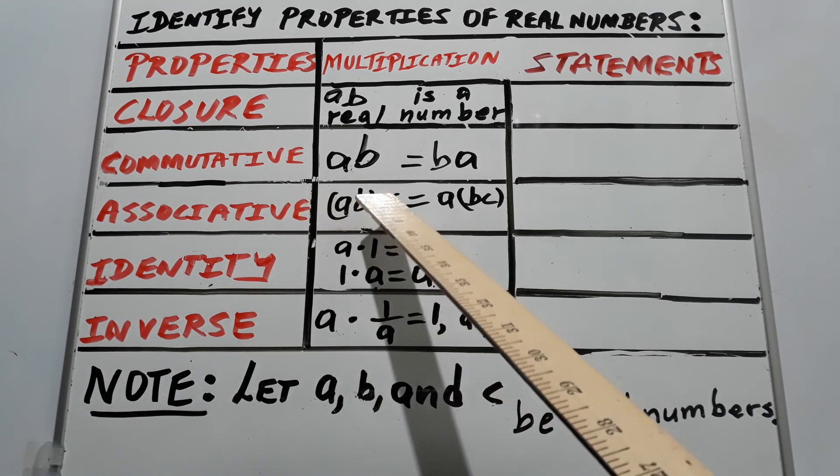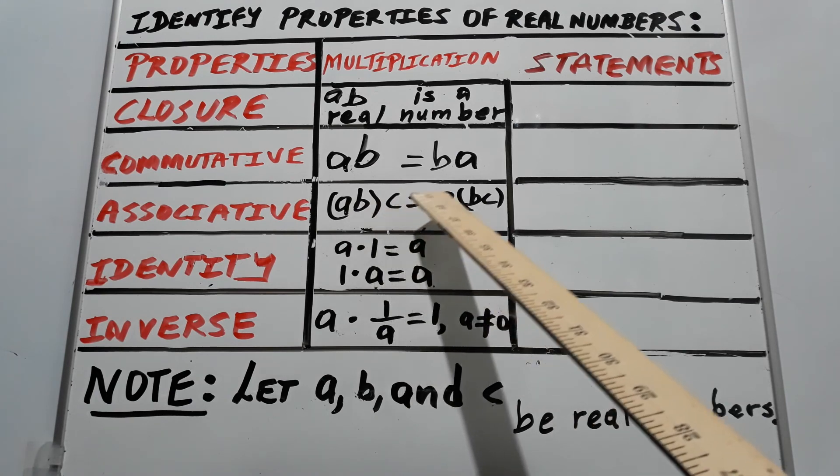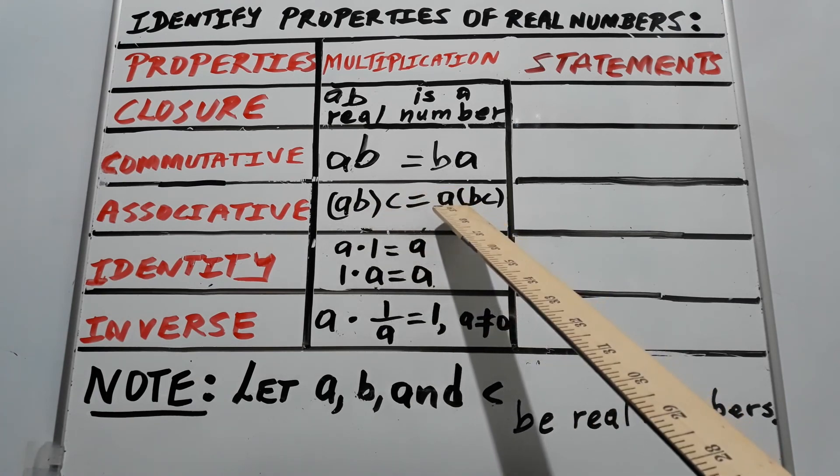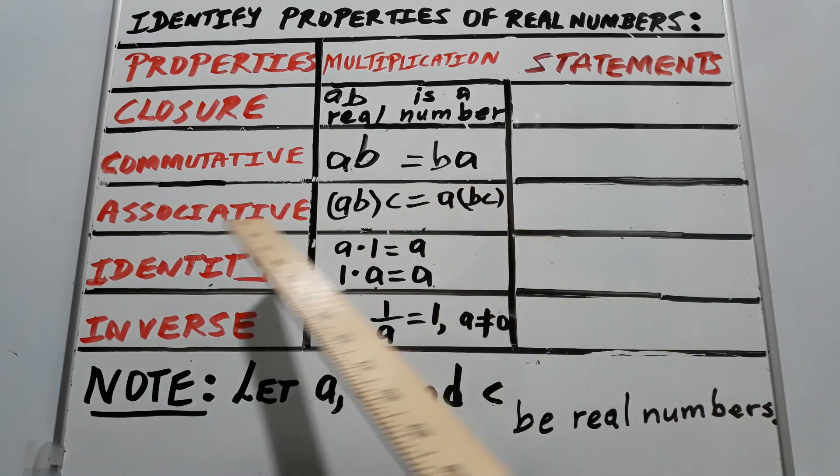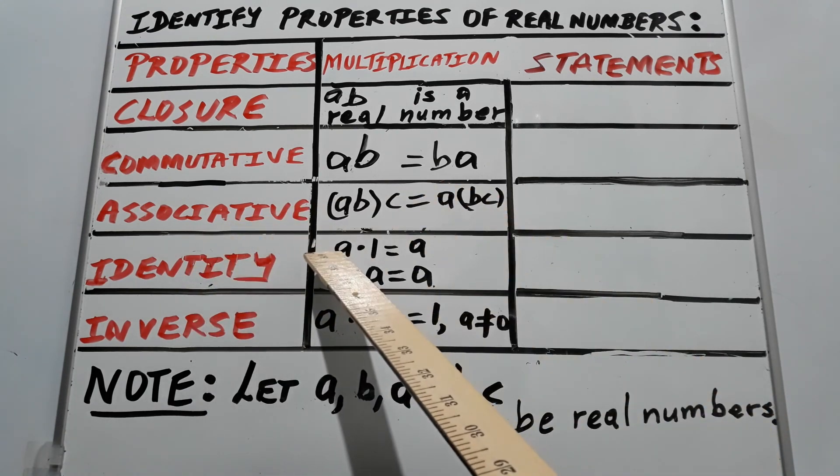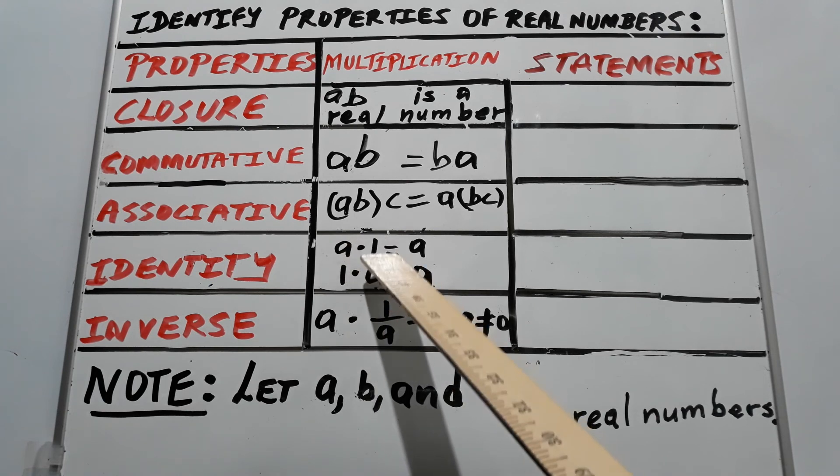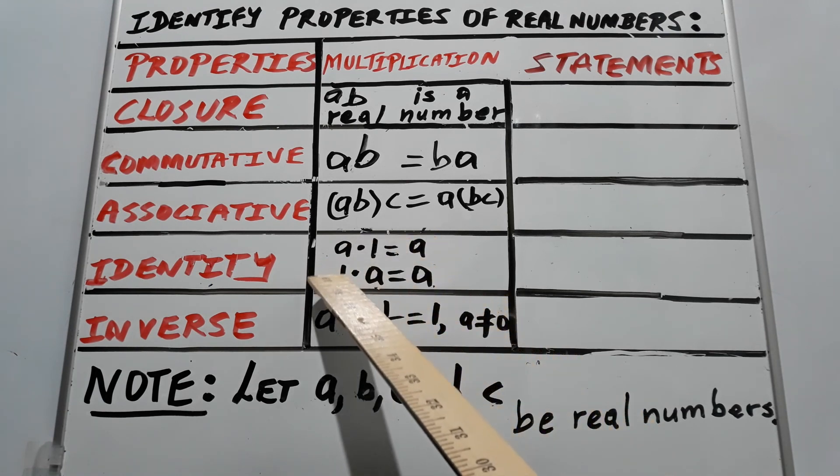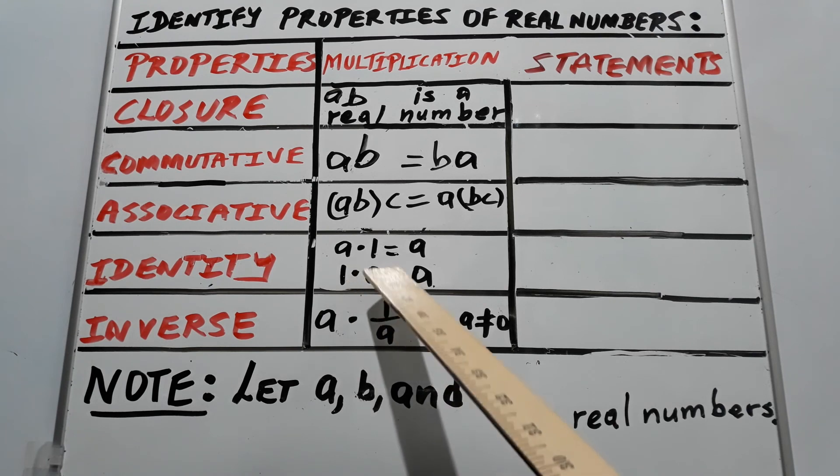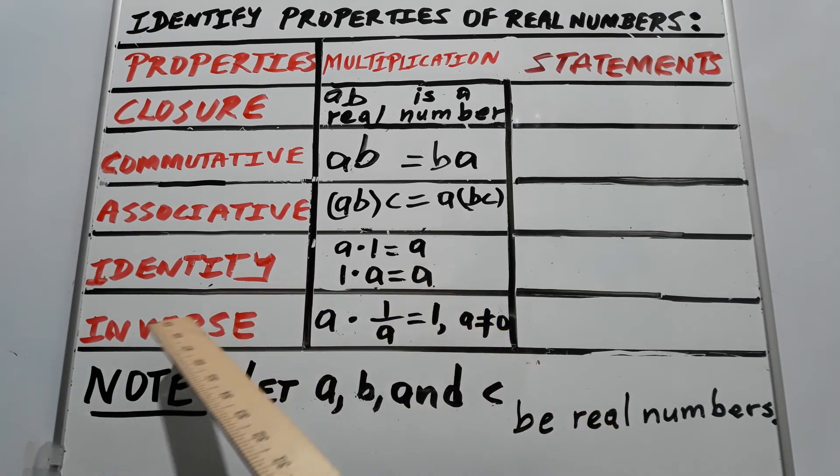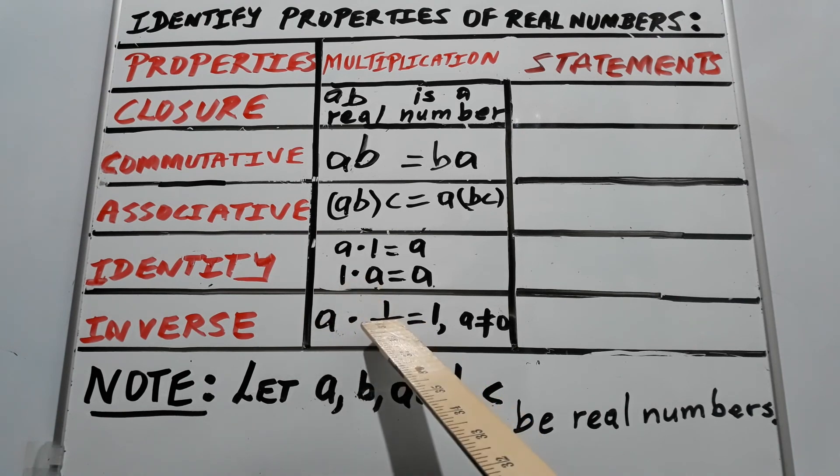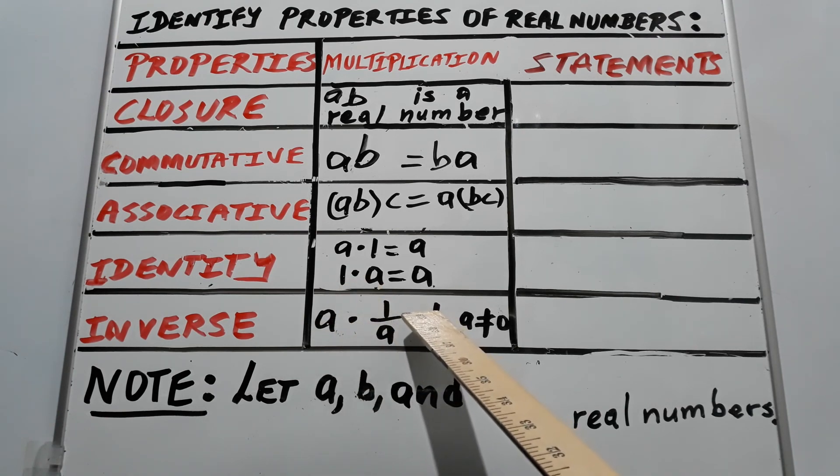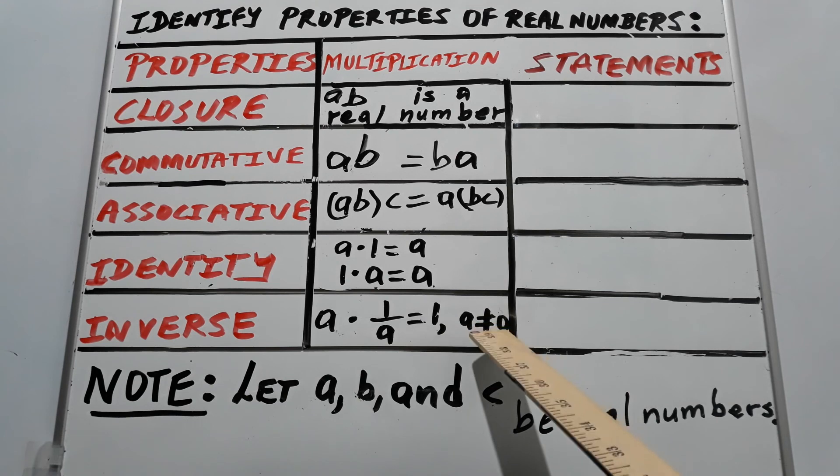Associative: open parenthesis a times b close parenthesis times c equals a times open parenthesis b times c close parenthesis. Identity: a times one equals a, one times a equals a. Inverse: a times one over a equals one, where a cannot equal zero.